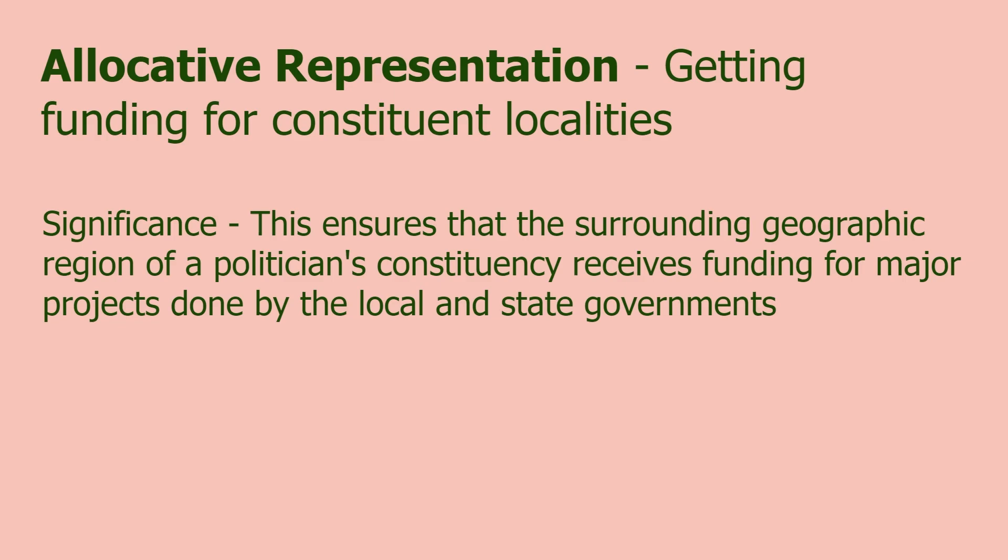Allocative representation: getting funding for constituent localities. This ensures that the surrounding geographic region of a politician's constituency receives funding for major projects done by local and state governments. A lot of local and state politics is about getting people that represent them in higher levels of government to get funding for their states and districts. That's what allocative representation is.